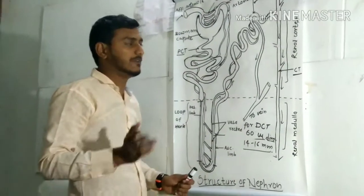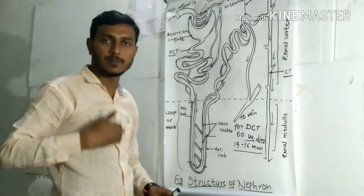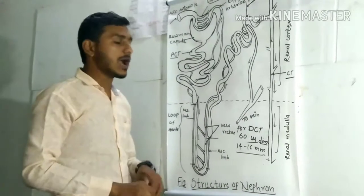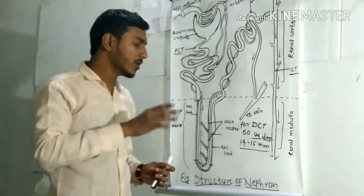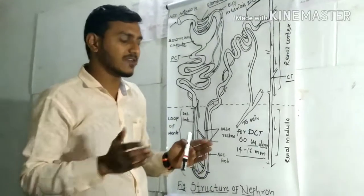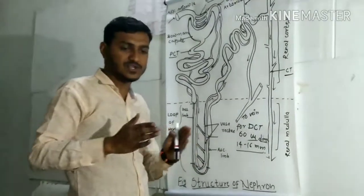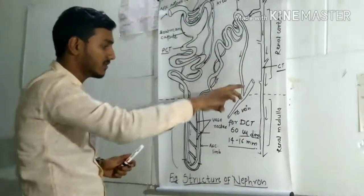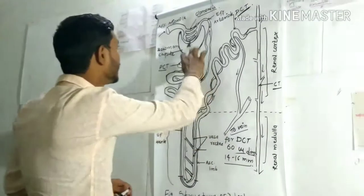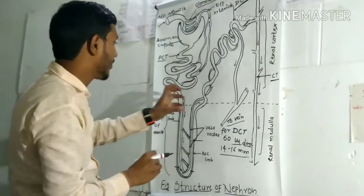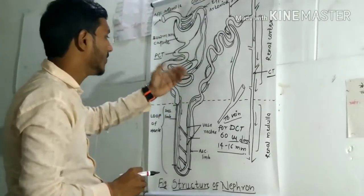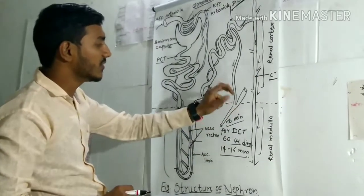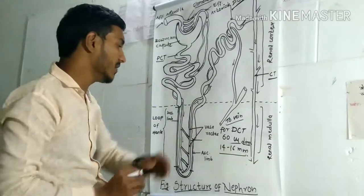There are about 1 million nephrons in our kidney — this is extremely important factual content, so it must be memorized. The peritubular capillary, after absorption and removal of waste, becomes deoxygenated, and this deoxygenated blood is carried out by the renal vein.